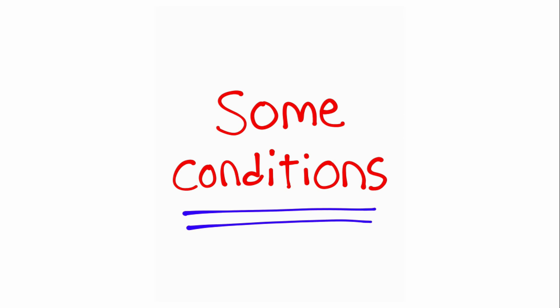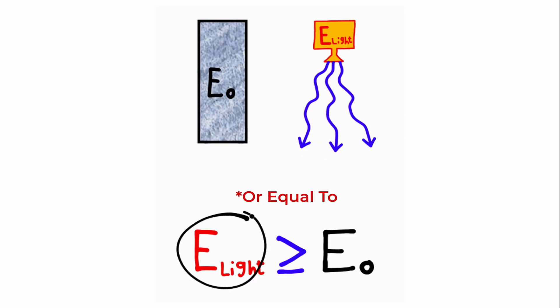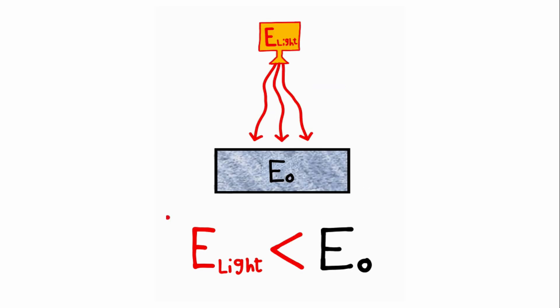For example, the energy of the light that you fire at the metal needs to be greater than the minimum amount of energy required to eject electrons from the metal. This minimum amount of energy is called the work function of the metal, and it varies depending on what metal you use. So if the energy of the light is smaller than the work function of the metal, no electrons will be ejected from the surface.